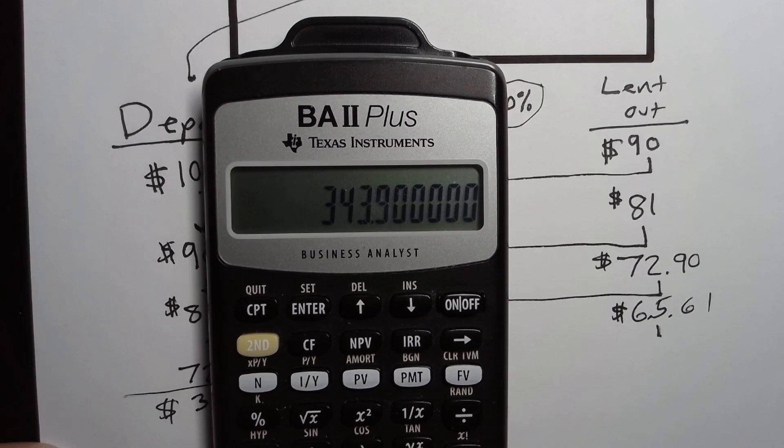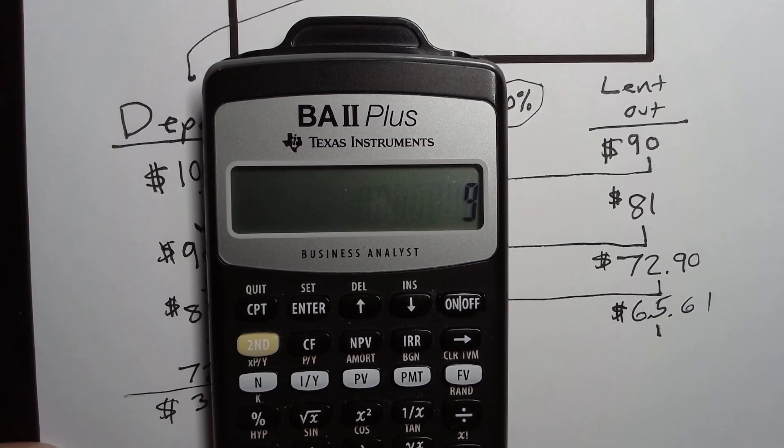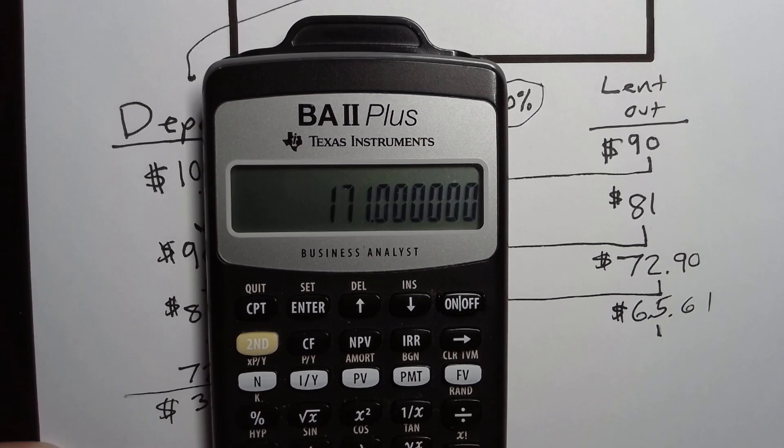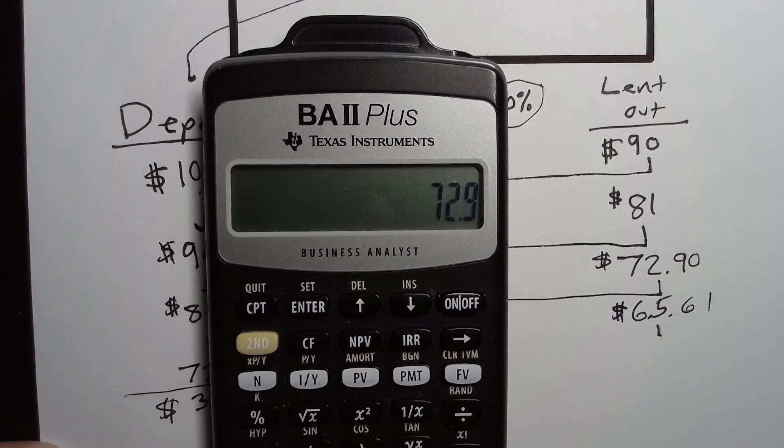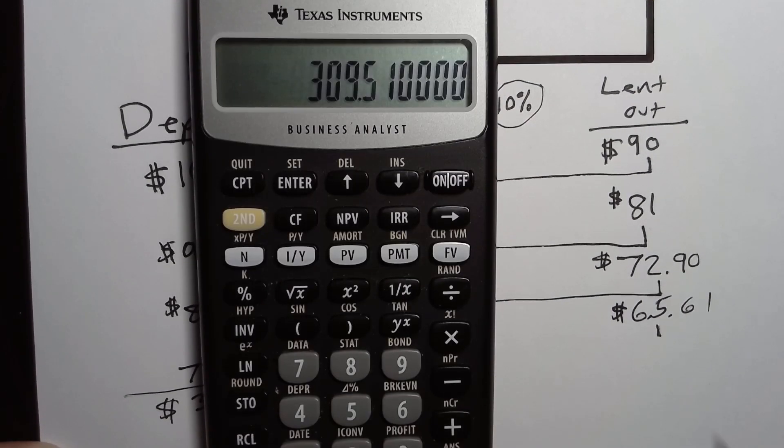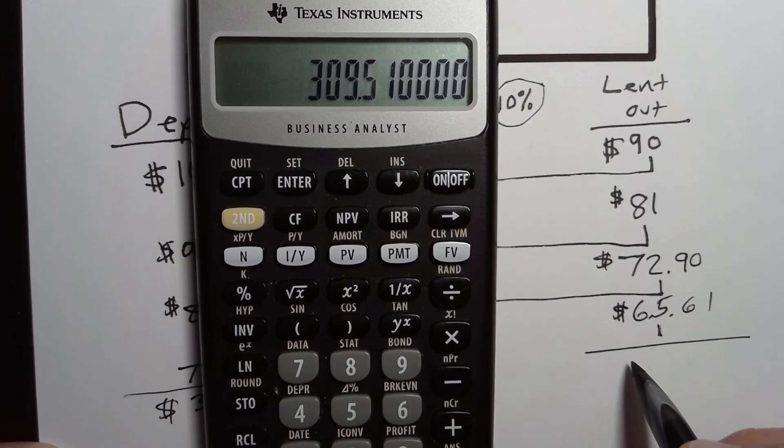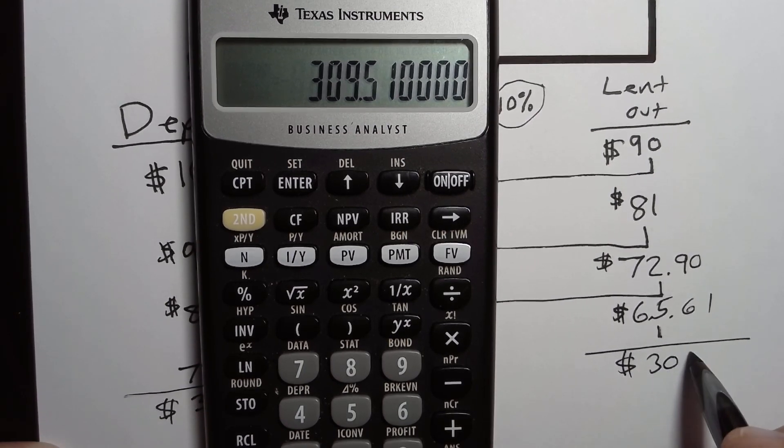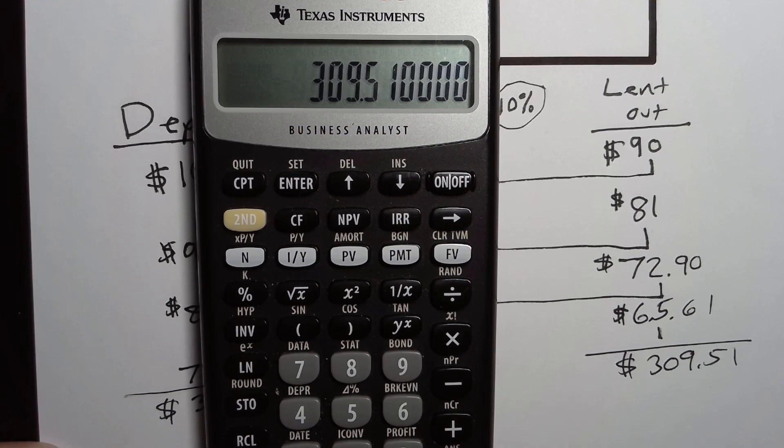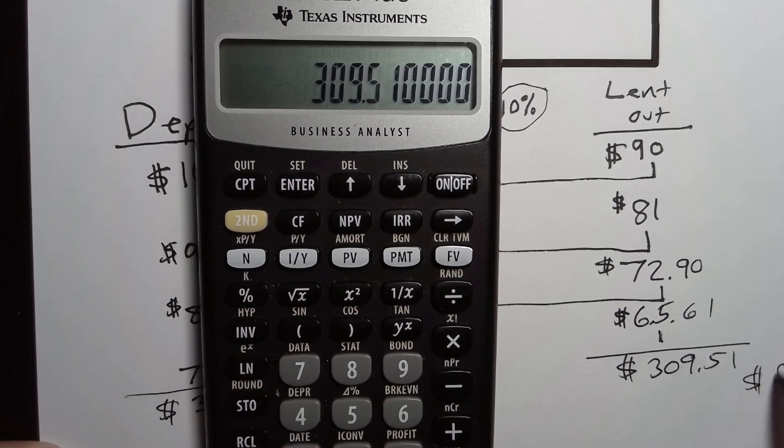Of that, the bank has lent out $90 plus $81 plus $72.90 plus $65.61. And that's all lent out. That means that $309.51 has been lent out and is earning interest for the bank.